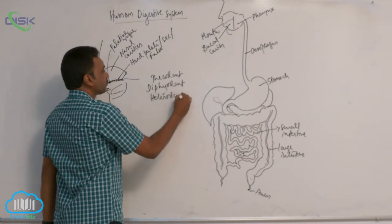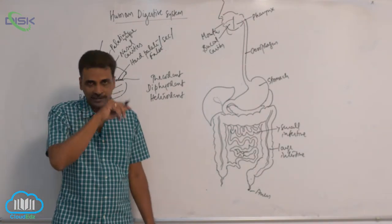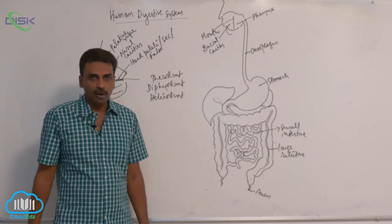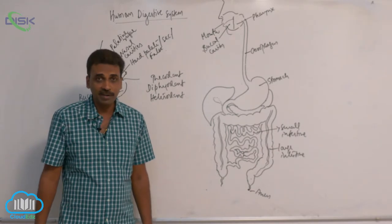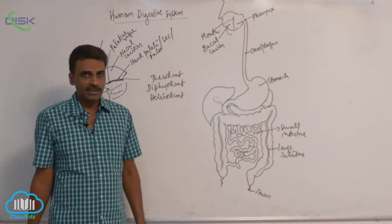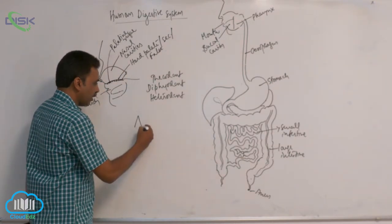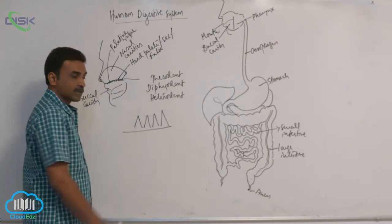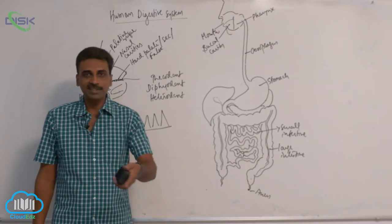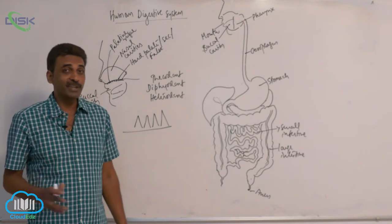Heterodont dentition. When different types of teeth are present — when all teeth are not structurally similar — you call it heterodont dentition. When structurally similar teeth are present, it is called homodont dentition. Fishes, amphibians, and most reptiles have homodont dentition, but in case of human beings, the dentition is heterodont.